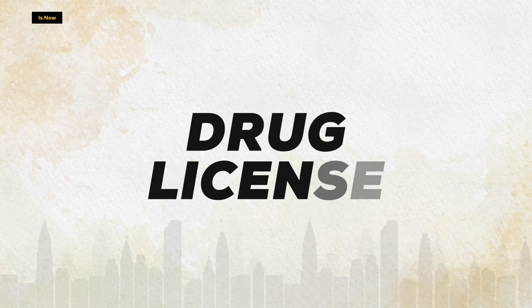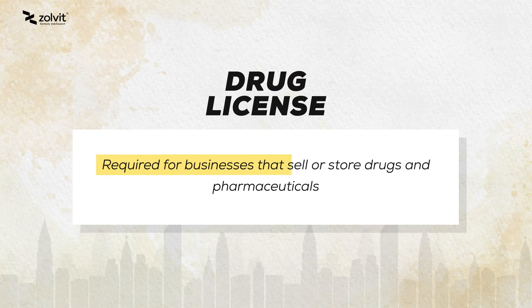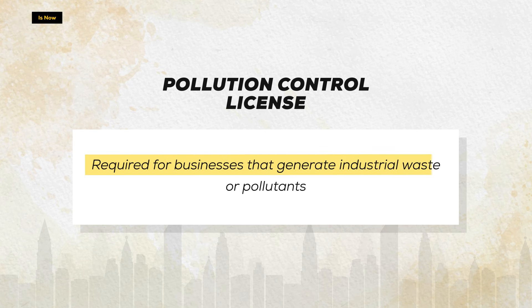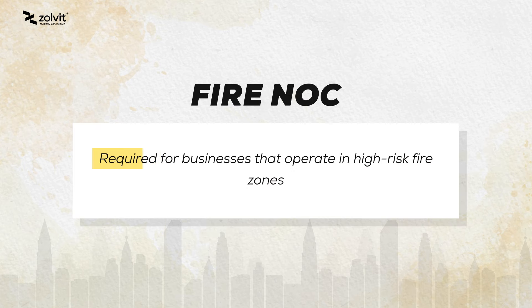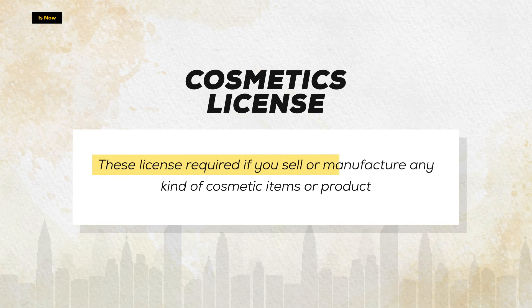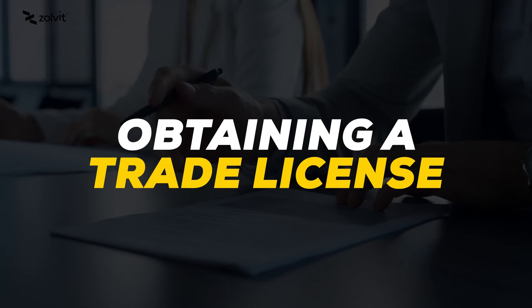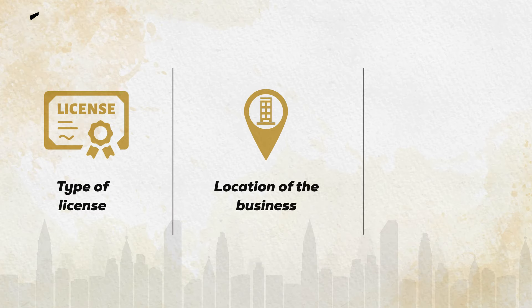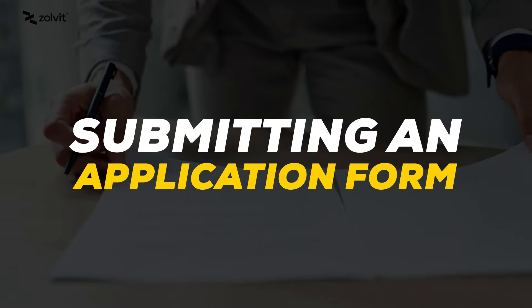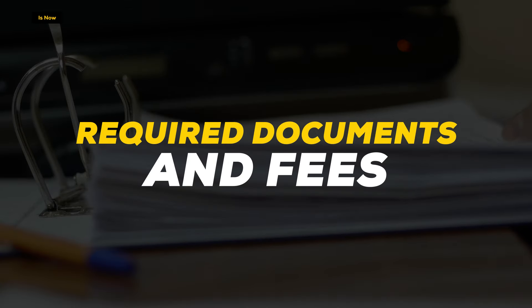In addition to these main three types, there are other types of trade license that you might require depending on the specific nature of your business, such as drug license required for businesses to sell or store drugs and pharmaceuticals, pollution control license required for businesses that generate industrial waste or pollutants, fire NOC required for businesses that operate in high risk fire zones, and cosmetic license required if you sell or manufacture any kind of cosmetic items or products. The general process typically involves submitting an application form along with the required documents and a fee to the relevant issuing authority.